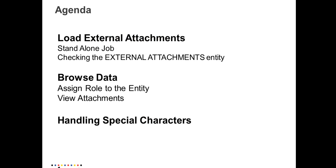The agenda for today is to run the standalone job for loading the external attachment to the data vault, then checking the external attachment application module and the AM attachment entity in the EDM. Then, in order to browse this attachment from the browse data in the ILM web UI, we will be assigning a role to the entity AM attachments and then viewing the attachment from the browse data window. Then, given that our attachment has special characters, we will be seeing how to handle these special characters and what settings we need to make.